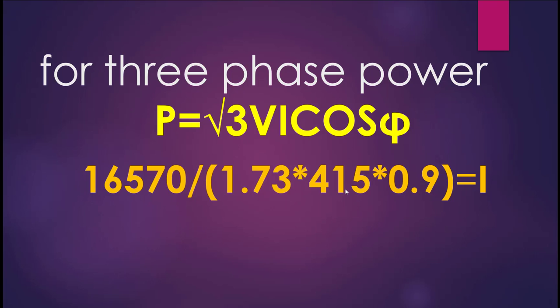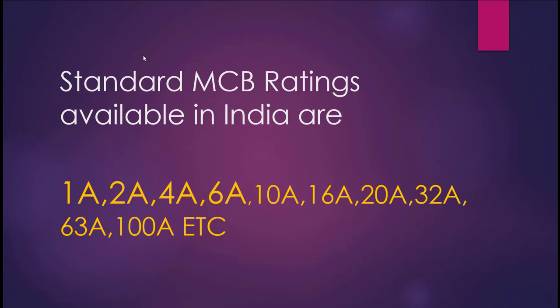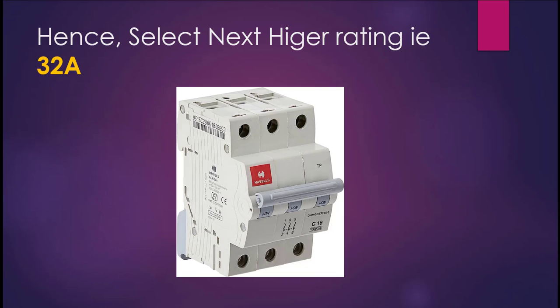For three-phase voltage we have phase-to-phase voltage of 415 volts. For the power factor, since we have some inductive load — we're using a motor and some heating equipment — we'll take cosφ as 0.5. So solving for I, we get approximately 25.64 amps. We need a three-phase MCB. Since 25.64 amps is not available as a standard rating in India, you have to go for the higher rating, which is 32 amps. So 32 amps will be the perfect MCB for your three-phase load.